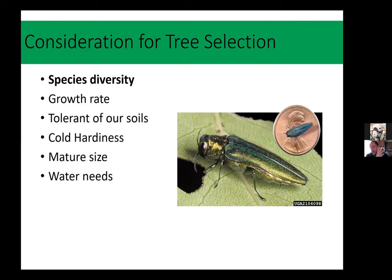If you'd planted a diversity of tree species and ashes were maybe less than 10% of what you planted, Emerald Ash Borer is still a bummer, but it's not that landscape-changing, end-of-the-world sort of bummer it is for some landscapes. The same is true for other pests and weather events — we've had extreme temperature changes that affected some species of trees more than others. So look around and give diversity a thought.